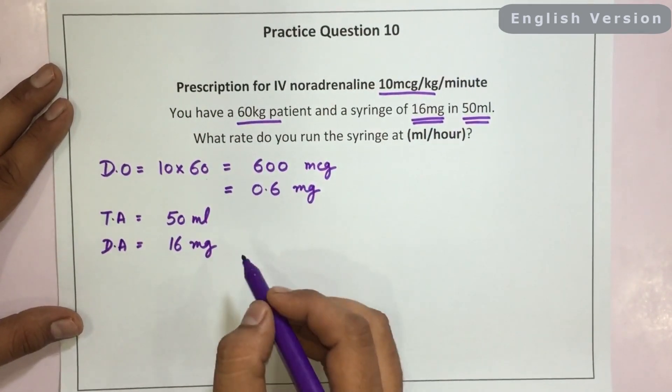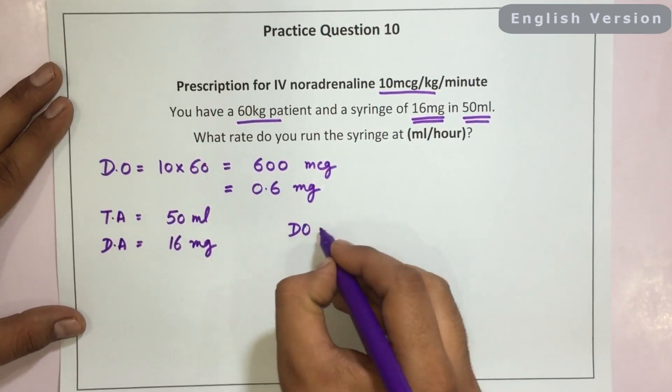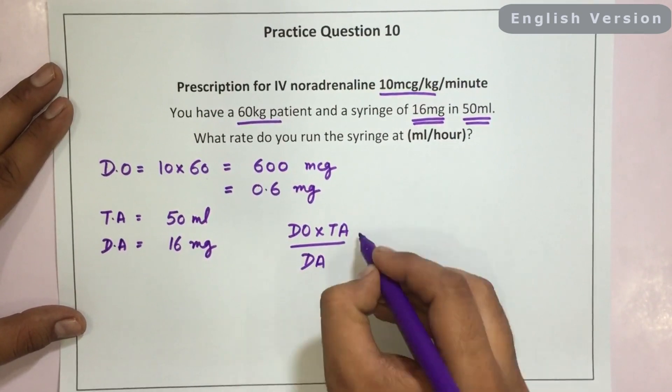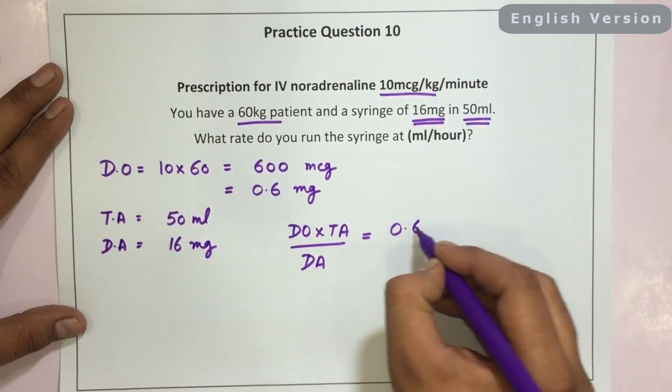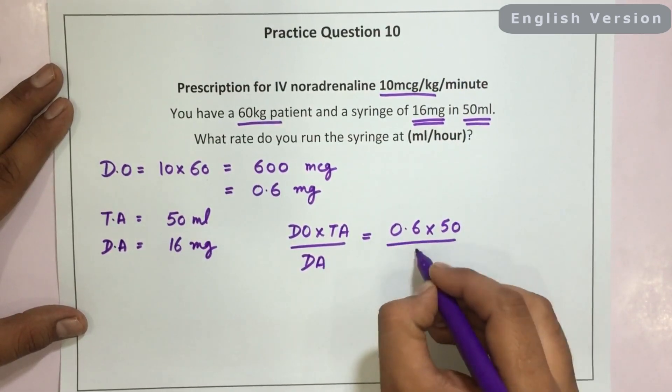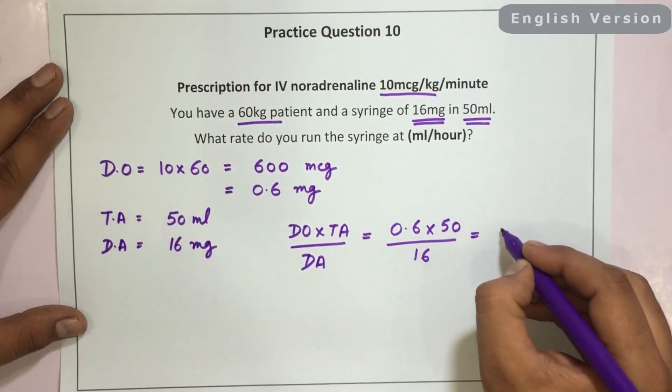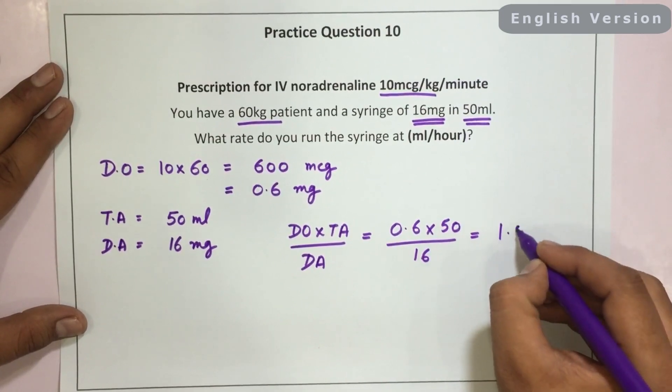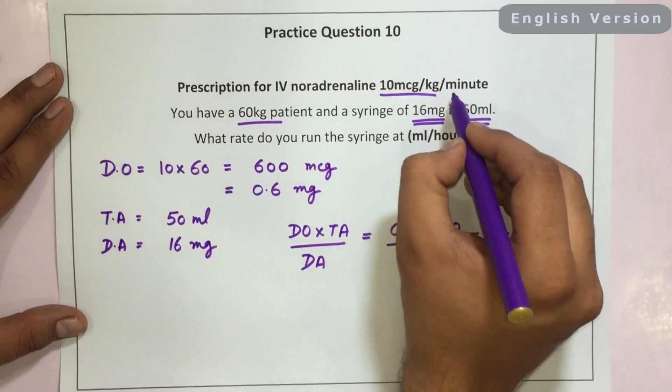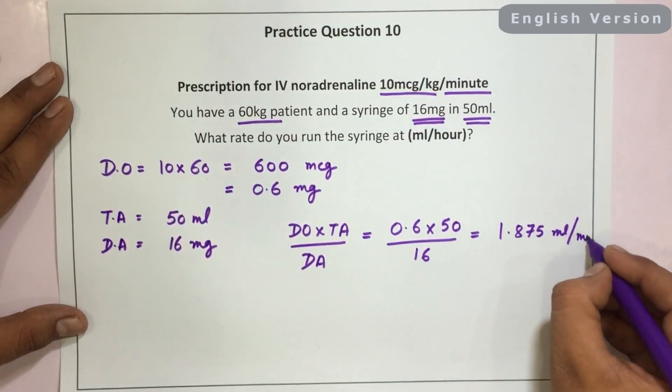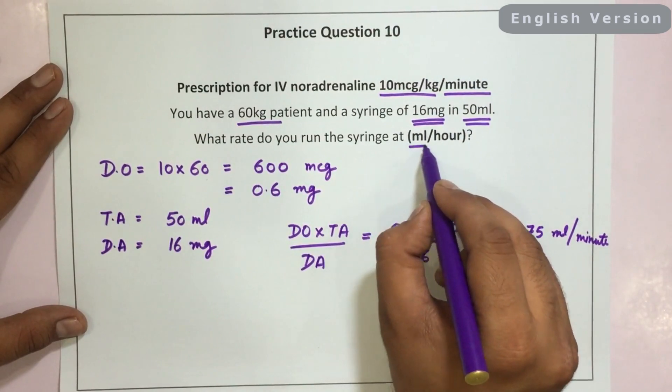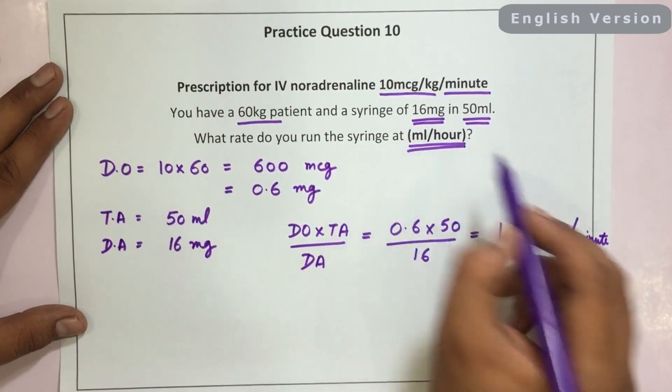Now we can calculate it with the formula DO TA divided by DA. 0.6 into 50 divided by 16. It will come as 1.875 ml per minute. The question here is asking the answer in ml per hour.